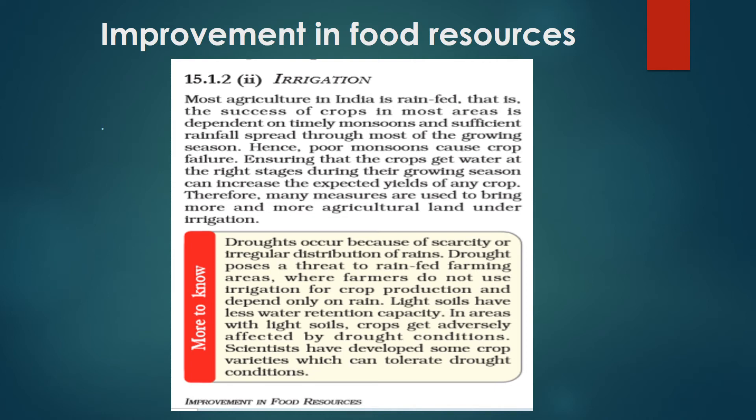Let's do end of class 9. Let's continue our chapter on improvement in food resources. In my last video I discussed about the Kharif crop and Rabi crop — seasonal crops that depend on the amount of rain. Today let's discuss about the irrigation process.